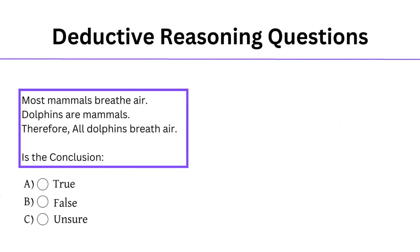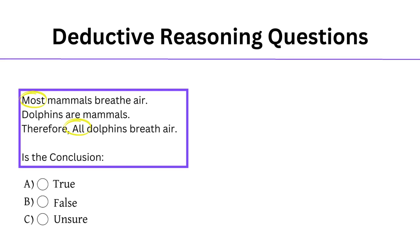Our second question has key words to focus on. These words indicate the test is trying to trick you, so always check for words like 'all,' 'none,' or 'some.' Again, we will use visuals, but this time we'll use a Venn diagram.